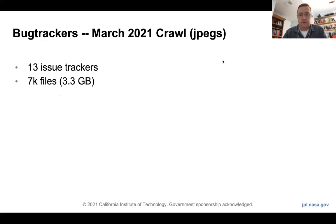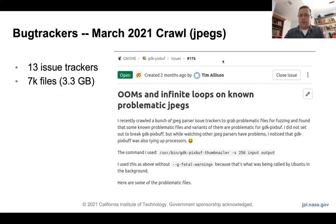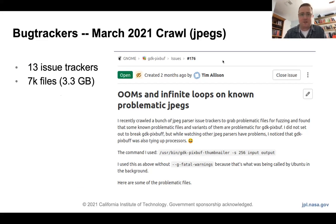In March, we became interested in JPEG files, so we reran the same process, targeting 13 issue trackers and bringing down about 7,000 files. We now have problematic JPEGs, which can be useful as part of PDF parsing because JPEGs are so integral to PDFs. During this process, I realized that some of these files are stressful even for one's own operating system — the thumbnailer in Ubuntu triggered some infinite loops when fuzzing those JPEGs.